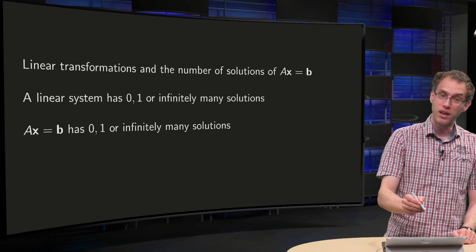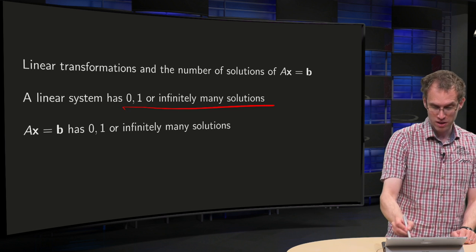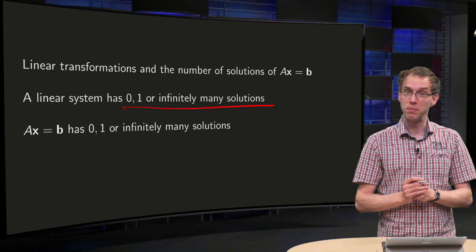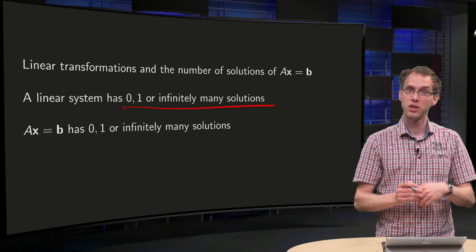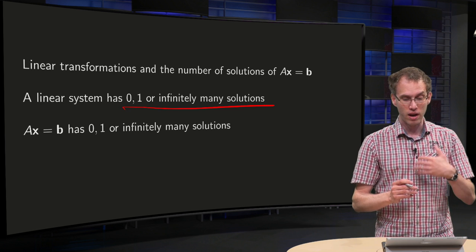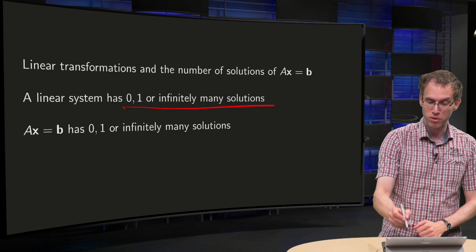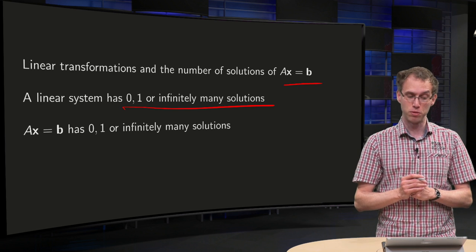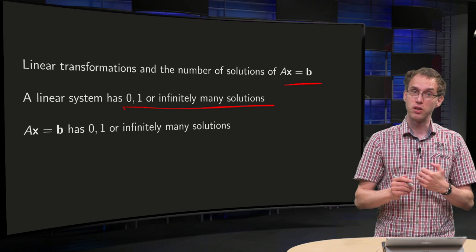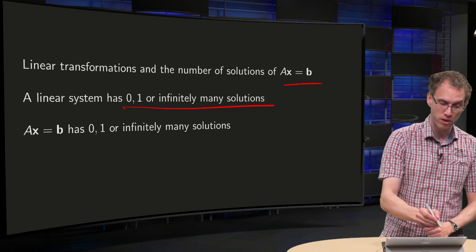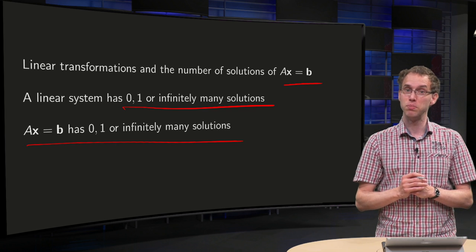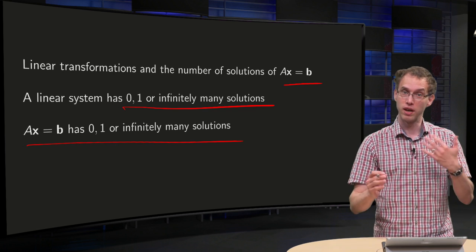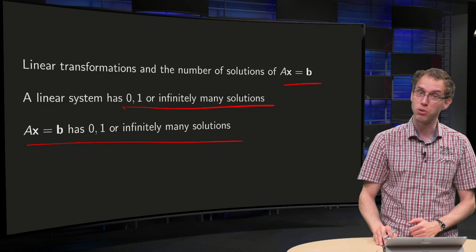A linear system has either 0, 1, or infinitely many solutions. A linear system is equivalent to the matrix equation Ax equals b, so the matrix equation Ax equals b also has either 0, 1, or infinitely many solutions.